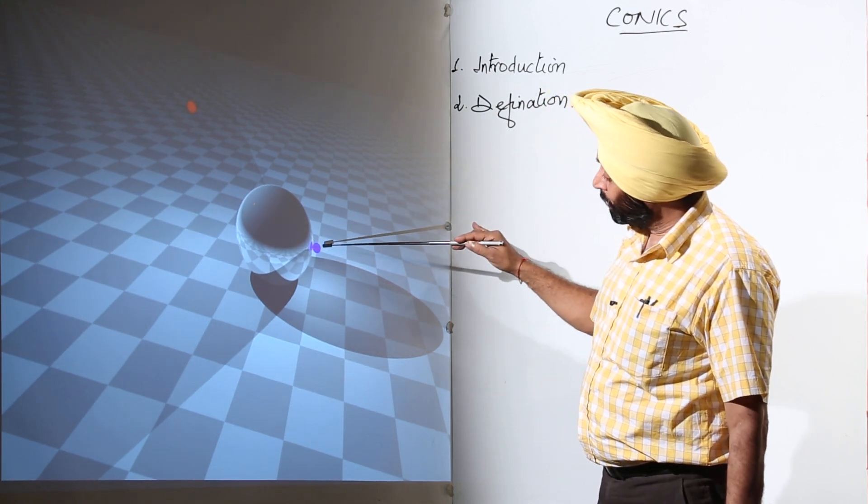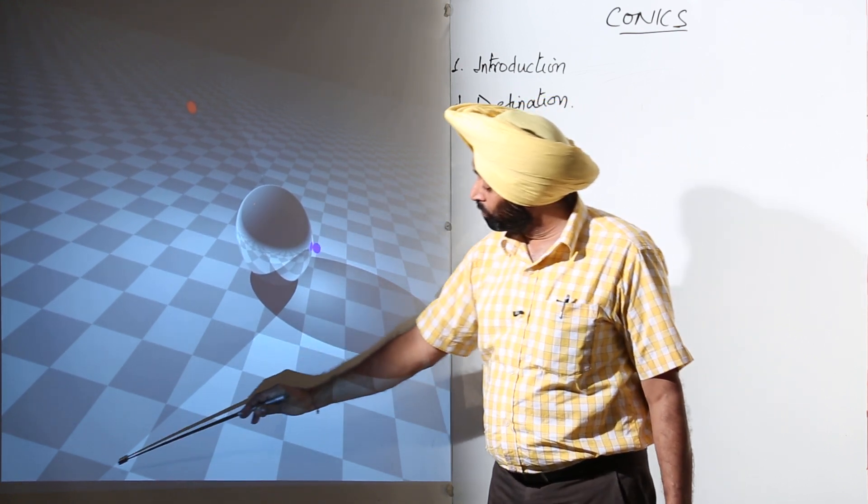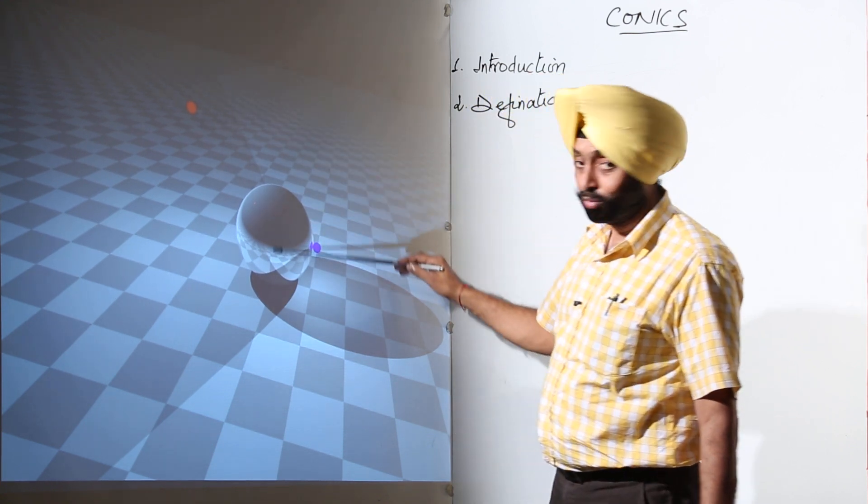One from here, when we are throwing a light source from here, we are getting a big parabolic figure like this. Big parabolic figure.